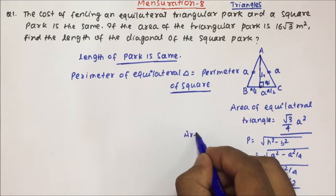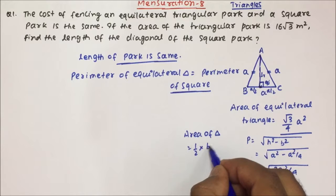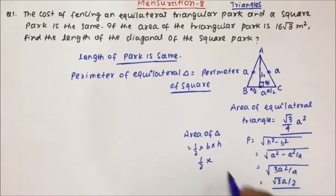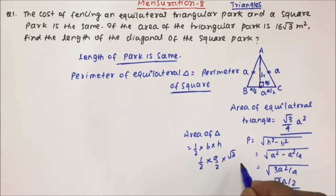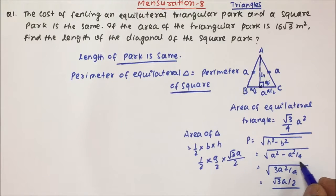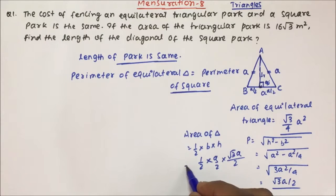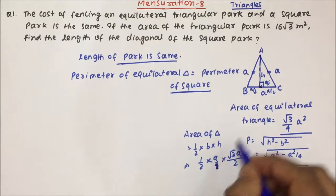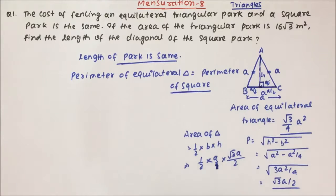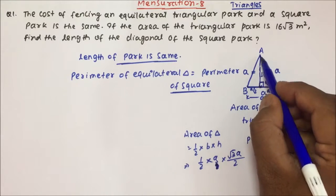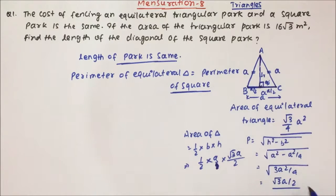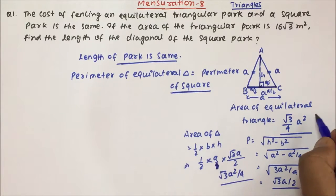Now if we talk about the area, area of triangle = 1/2 × base × height. I am sorry — the base will be total a, not a/2. So base is a, and we got perpendicular as √3·a/2. So this will become 1/2 × a × √3·a/2 = √3·a²/4. So from here, the area of the equilateral triangle is √3/4 × a².